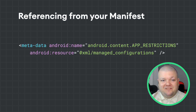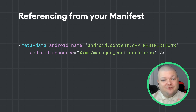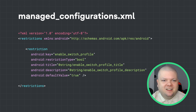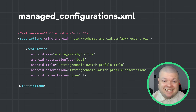Adding managed configurations functionality to your app is straightforward. To declare them in your app, you can create a managed configurations file and reference that file in your app's manifest. The managed configurations file is a simple XML file that resides in the resources folder.